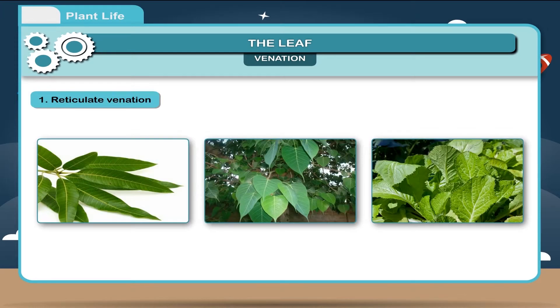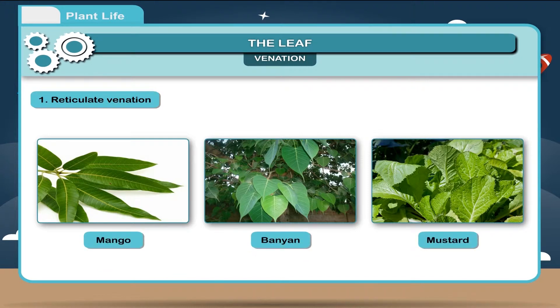Reticulate venation. When the veins and veinlets are irregularly distributed forming a network, it is called reticulate venation. This kind of venation is found in the leaves of mango, banyan and mustard.